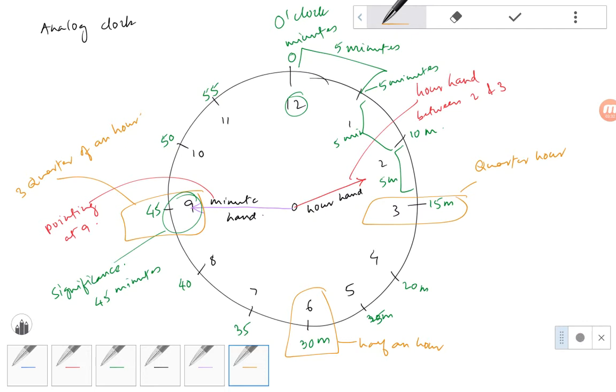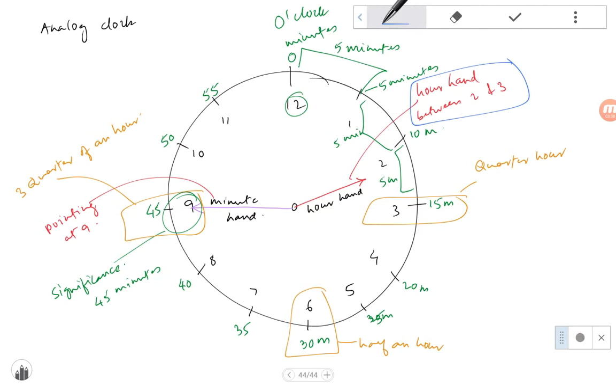In this example, we can see that the hour hand is between two and three. So that is signifying two o'clock.